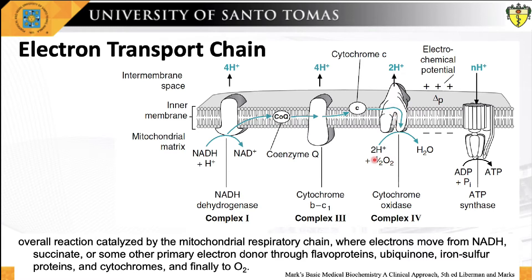As electrons pass through the chain, protons are pumped from the mitochondrial matrix to the intermembrane space, thereby establishing an electrochemical potential gradient across the inner mitochondrial membrane. This electrochemical potential is then harnessed in the phosphorylation of ADP to ATP within the mitochondria.